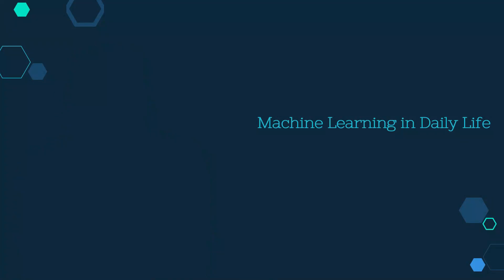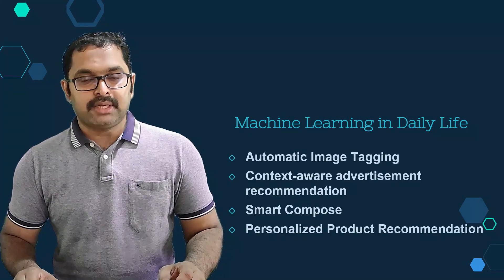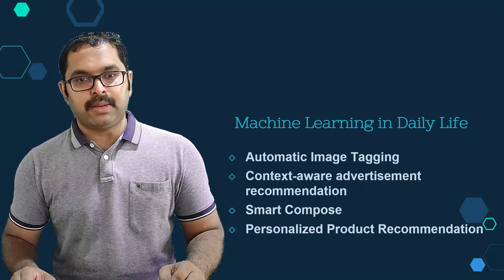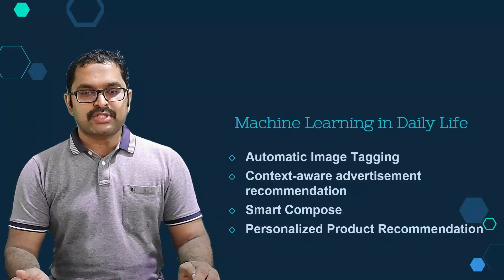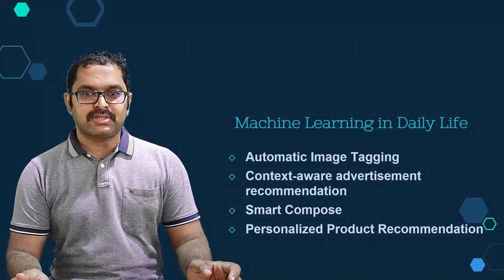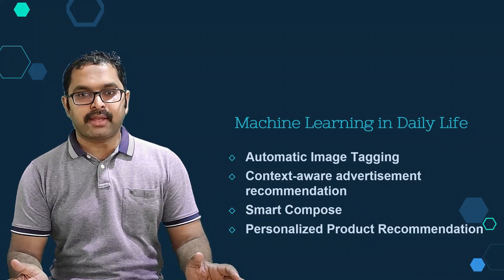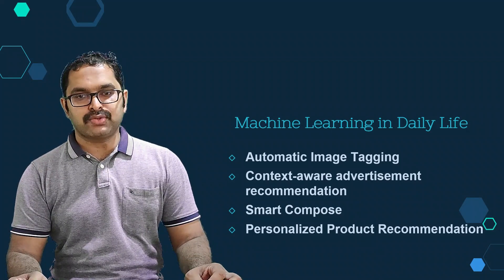We come across different applications of such learned systems in our daily life. In social networking sites, once a picture is uploaded, it automatically prompts us to tag our friends. Based on one's past behavior, the algorithm predicts interests and recommends different articles and notifications on the news feed.